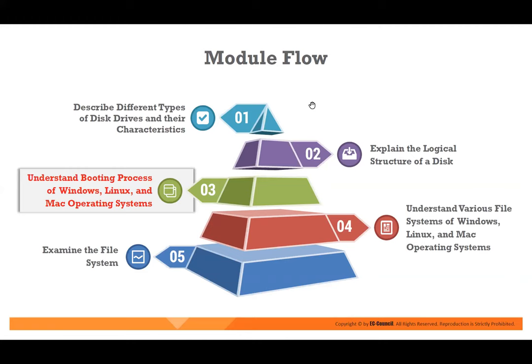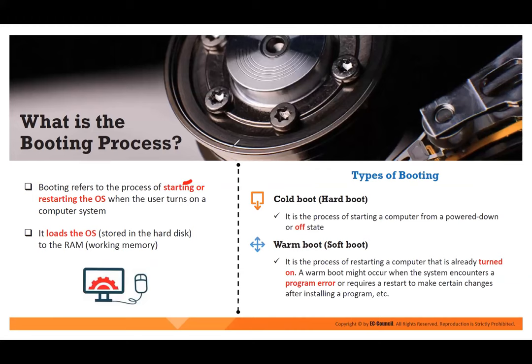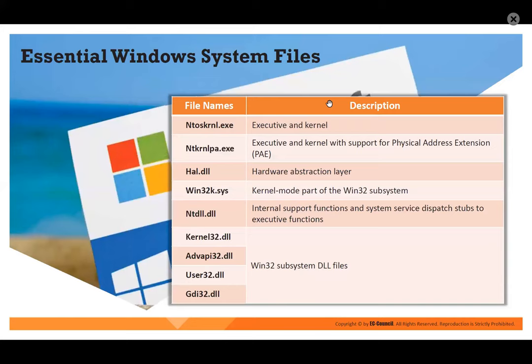Now let us understand how the Windows boot system works. Starting and restarting the OS loads it into RAM — we call this a cold boot, also called a hard boot. A warm boot means you restart the computer — also called a soft boot. The files required for Windows to work include: NT OS kernel, executive and kernel, NT kernel and PAL — physical intersection center — hardware abstraction layer, kernel mode part of Win32K, NT DLL internal support functions, and other essential DLL files.